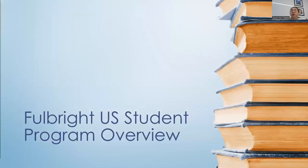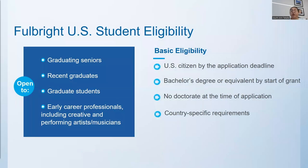A very brief overview of the Fulbright U.S. Student Program. If you need more details, come to one of our other info sessions or watch a recording posted on the Canvas site. The Fulbright U.S. Student Program is for somebody who has a bachelor's degree. Applications are open to graduating seniors, recent graduates, graduate students, as well as early career professionals, including creative and performing artists and musicians.